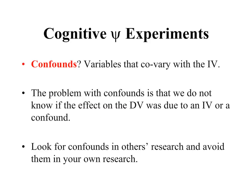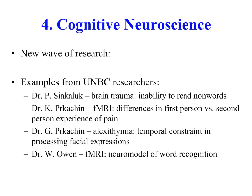One of the important things to consider in cognitive psychology experiments is whether confounds exist. Confounds, or extraneous variables, are variables that co-vary — that is, they go together with the independent variable. The problem with confounds is that we do not know if the effect on the dependent variable was due to the independent variable, the confound, or a combination of both. Be on the lookout for confounds in others' research and avoid making them in your own.